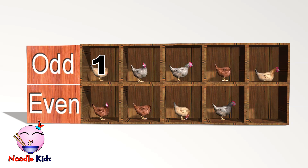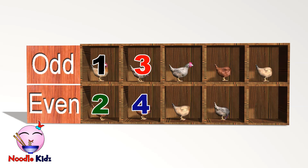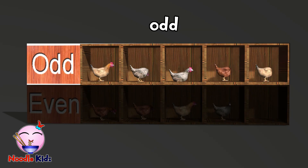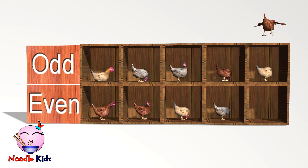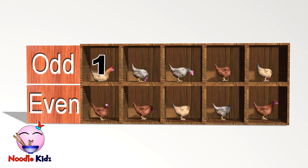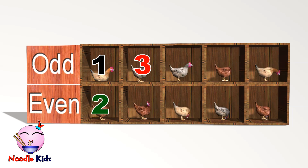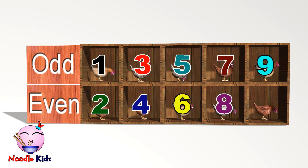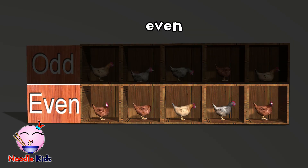One, two, three, four, five, six, seven, eight, nine. Nine is an odd number. One, two, three, four, five, six, seven, eight, nine, ten. Ten is, yes, an even number.